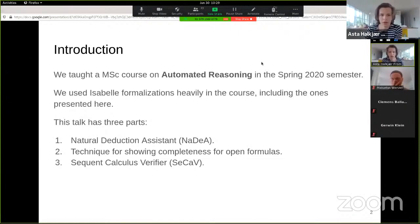We taught a master's course on automated reasoning in the spring 2020 semester, where we used Isabel formalizations heavily, including the ones presented here. So the title is actually only the third part of this talk. First, I'll go into some history and background knowledge of our natural deduction assistant. I will give a technique for showing completeness for open formulas, because I don't think this is covered very often. And then we will get into this sequence calculus.